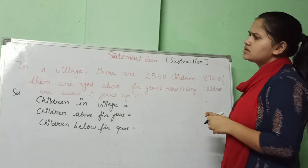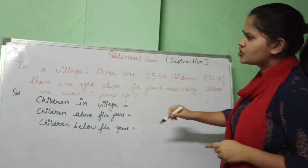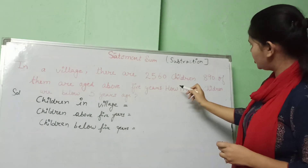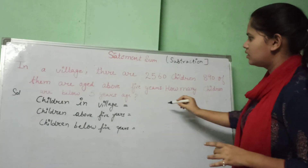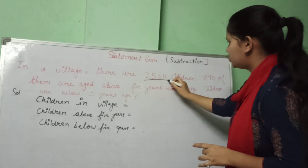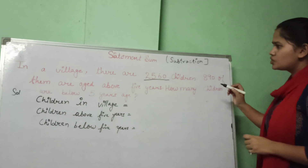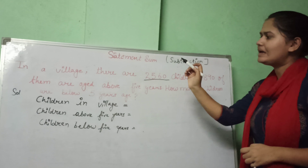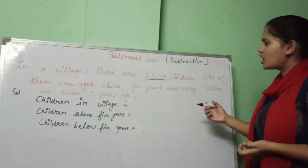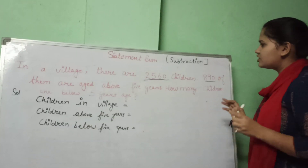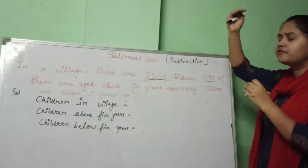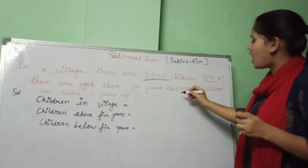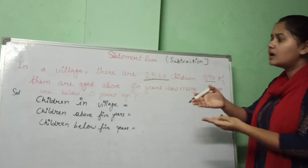Here is the first statement for subtraction. In a village, there are 2,560 children. 890 of them are aged above 5 years. The question asks: how many children are below 5 years?